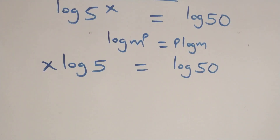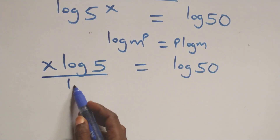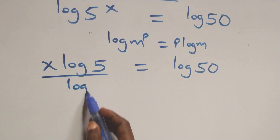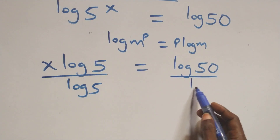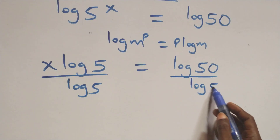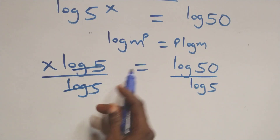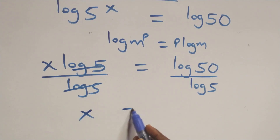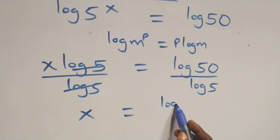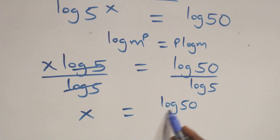At this here we divide both sides by log 5 — also divide this side by log 5. Which implies that log 5 cancels each other, and we have x equals to log 50 over log 5.